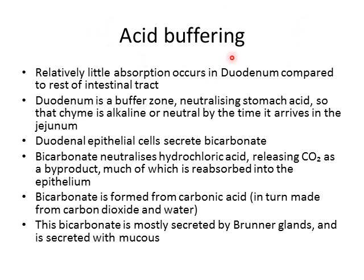Let's focus on the acid buffering function. The duodenum doesn't really absorb much in terms of nutrients, unlike the jejunum and ileum. Its main function is not absorptive like other parts of the intestine, but mainly to be the buffer zone, whereby it takes stomach acid with a pH of 1 or 2 and makes it alkaline or neutralized to a pH of 7 to 8 by the time it exits into the jejunum.